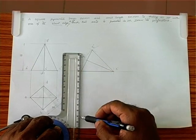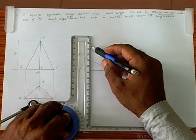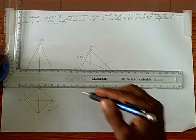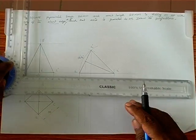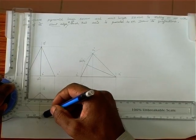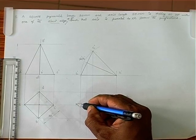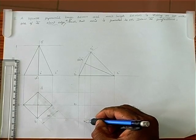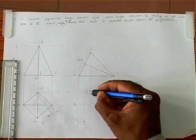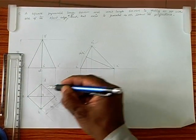Now we project to get the final top view. We draw projection lines through A, through B, through C, and through O. Similarly, we draw lines through the other corners. A horizontal and A vertical gives A1 here; B horizontal and B vertical gives B1; D vertical and D horizontal gives D1; O vertical and O horizontal gives O1.